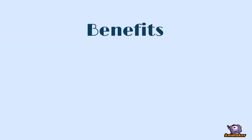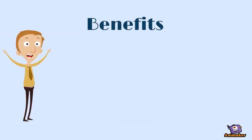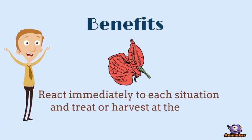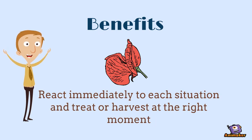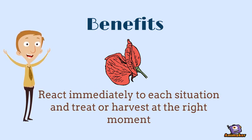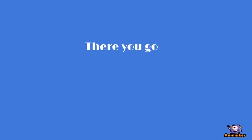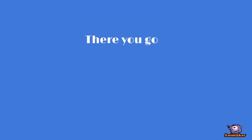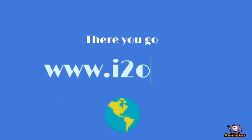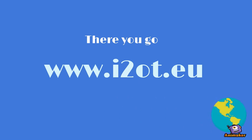Such a system can be really helpful to the farmer, who can react immediately to each situation and treat or harvest appropriately, thus protecting his assets and making savings. You can find more information on i2ot.eu. See you next time.